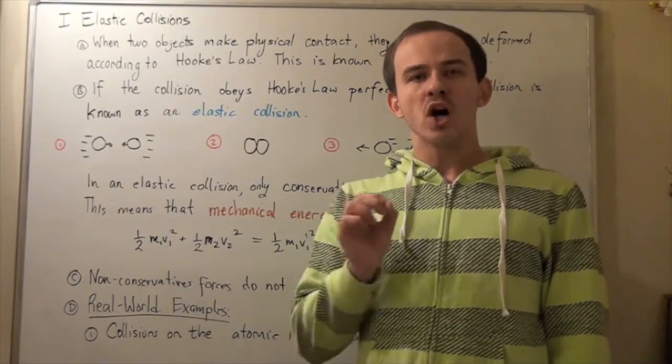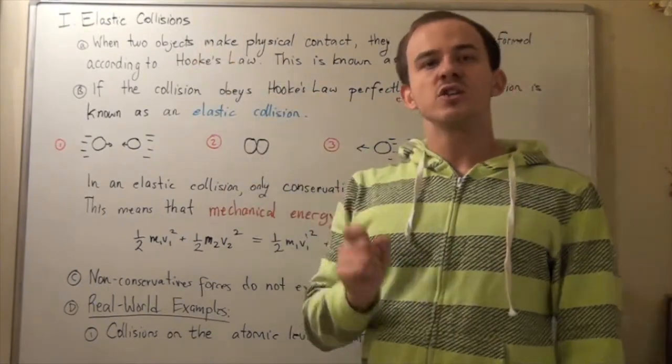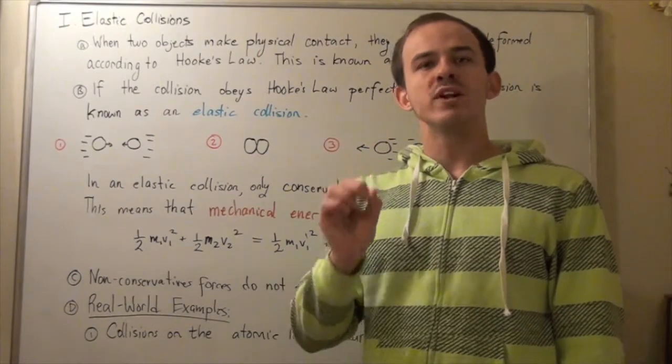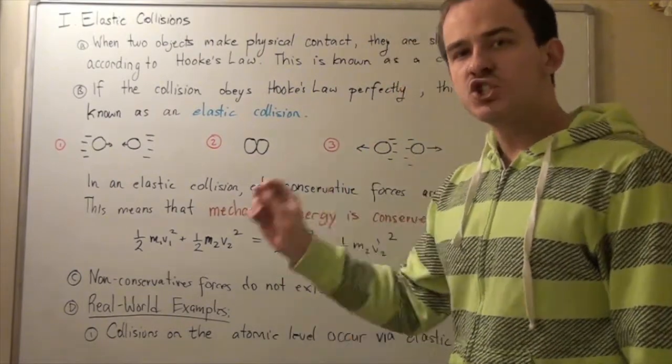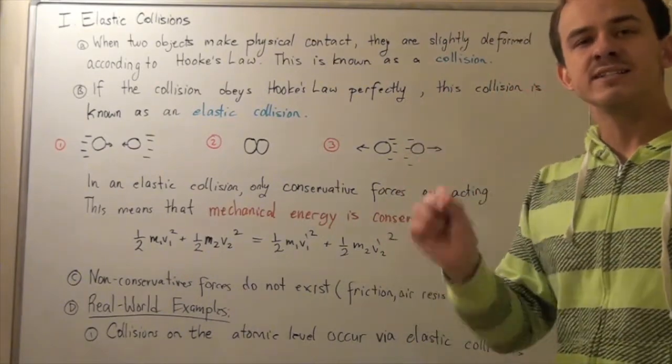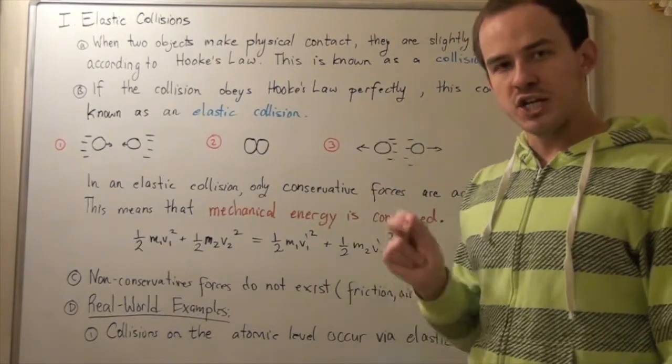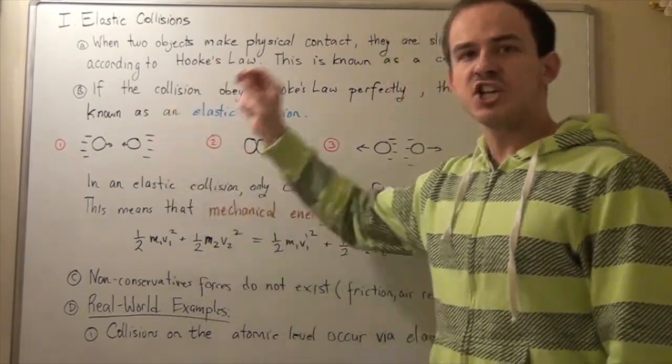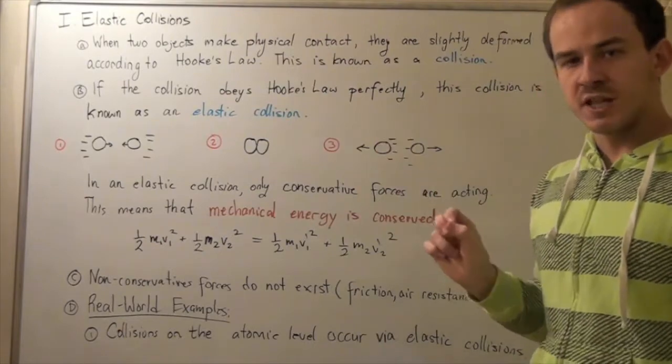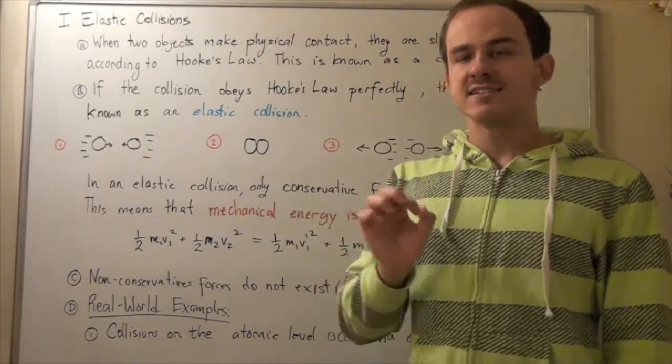In this lecture, we're going to talk about collisions, and more specifically, elastic collisions. Let's begin by first defining what a collision is. When two objects make physical contact, they are slightly deformed according to Hooke's law, and this is known as a collision. If the collision obeys Hooke's law perfectly, this type of collision is known as an elastic collision.